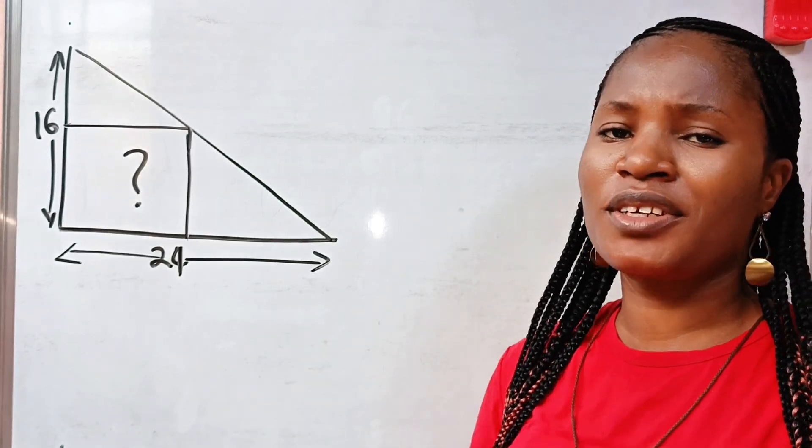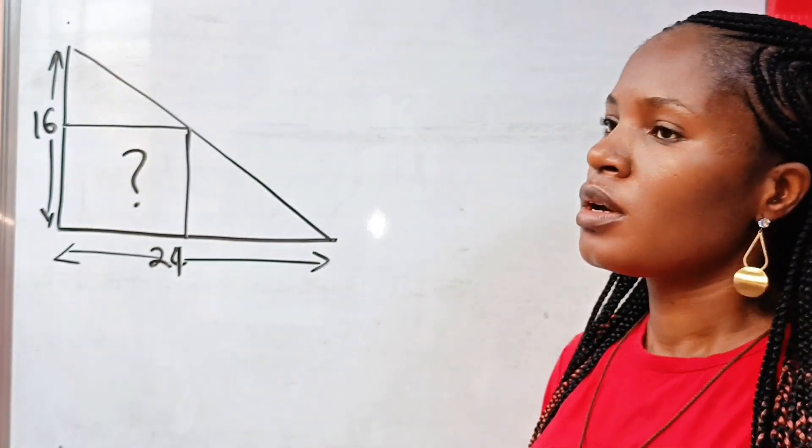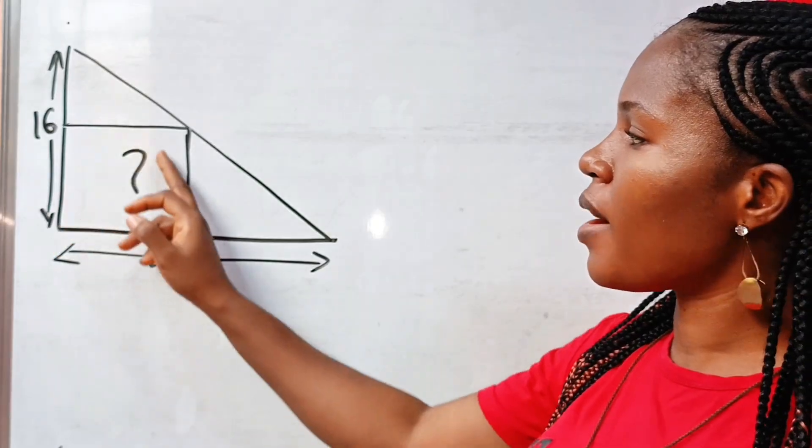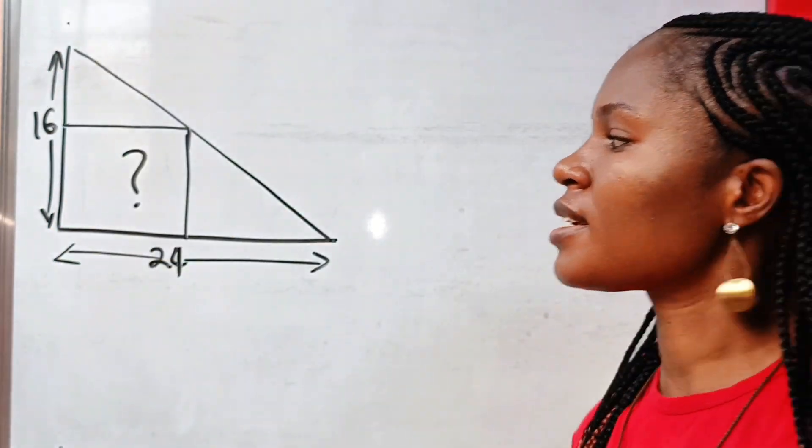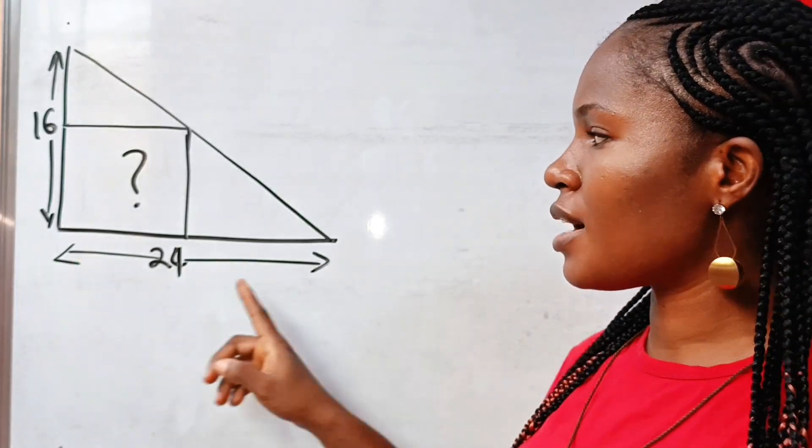Let's solve this tricky geometrical math question. We are asked to find the area of this square if the length of this side is 16 and the length of this side is 24.